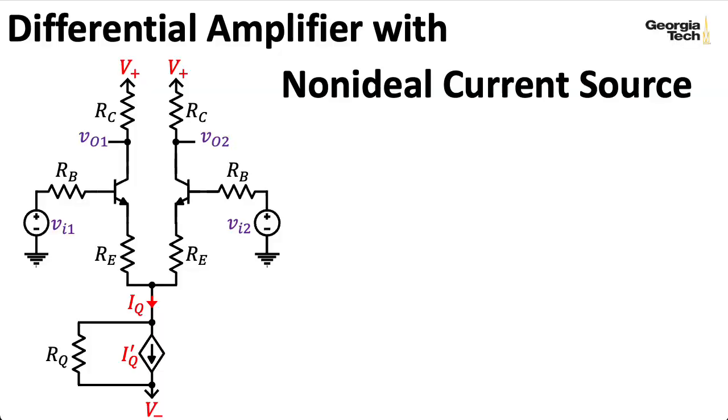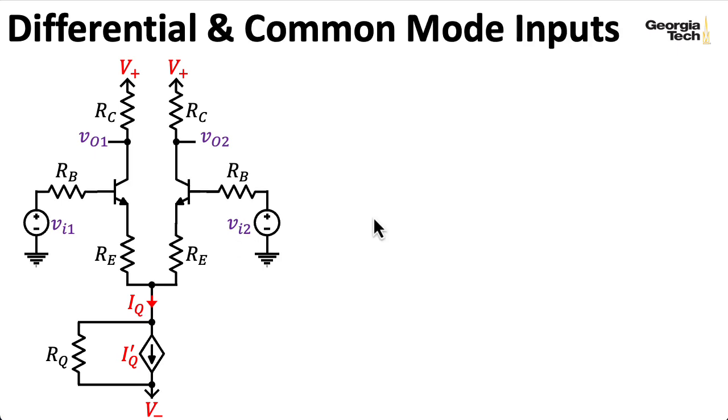So this is the differential amplifier circuit we've been looking at. We have two inputs, VI1 and VI2. These are small signal inputs, and what we're going to do is basically write these inputs in a new basis. I'm going to define a differential mode input, that's VI1 minus VI2, and a common mode input that's VI1 plus VI2 divided by 2.